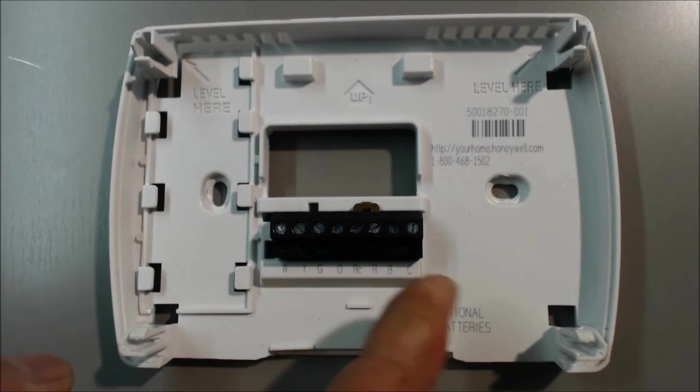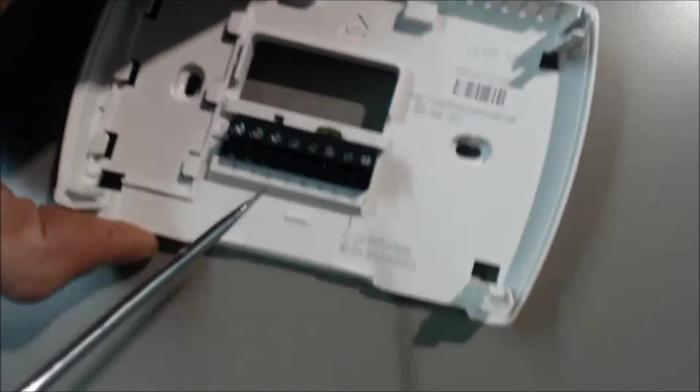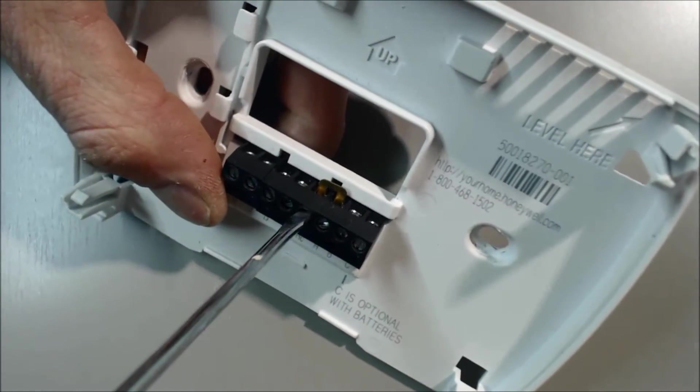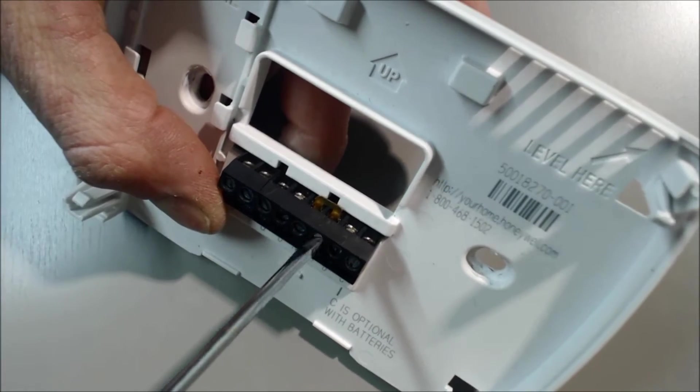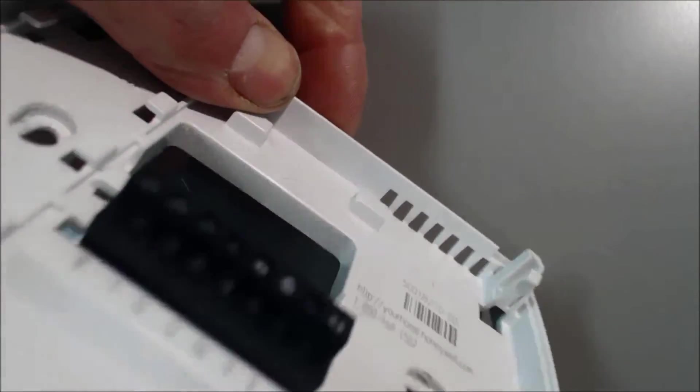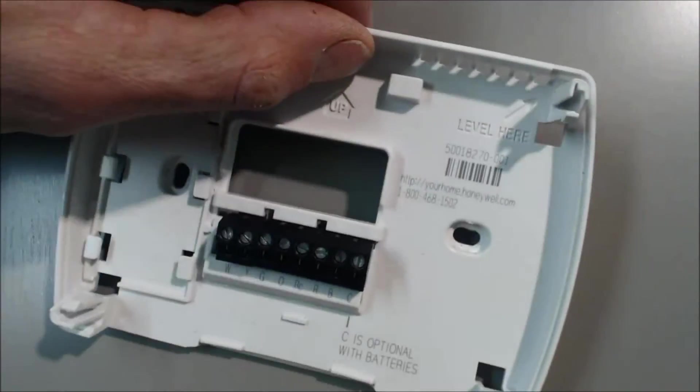And you'll take your terminal block right here and you'll take out the jumper wire. So we'll do that. Make sure you don't lose that, you could use it again on another thermostat.